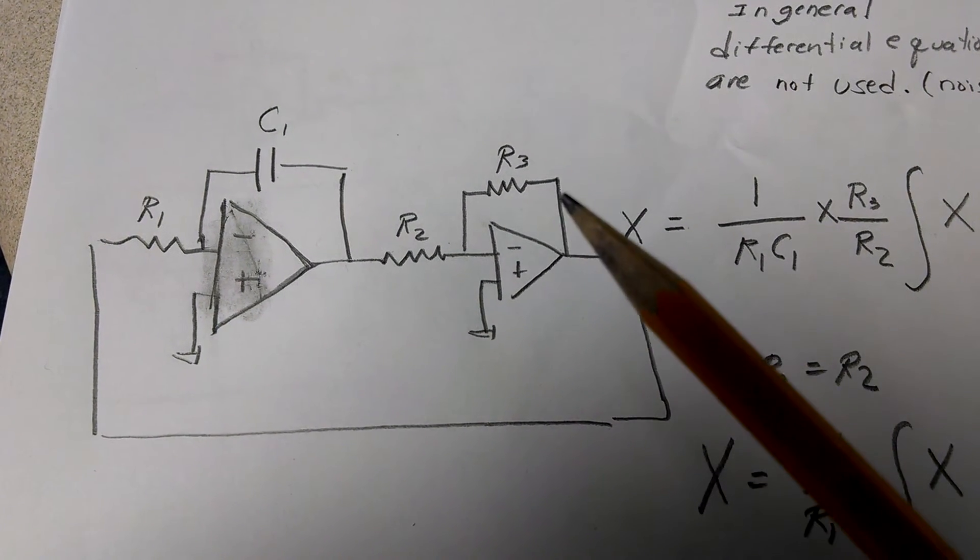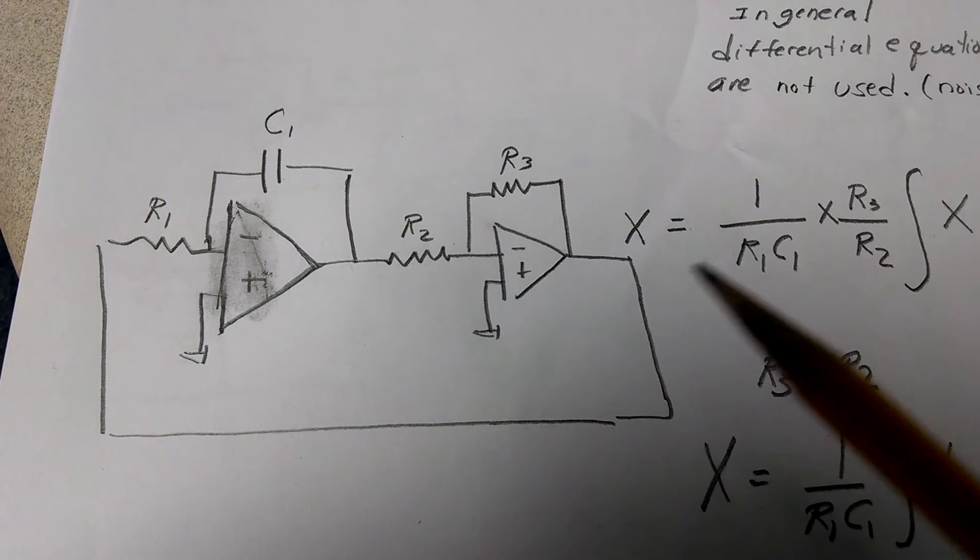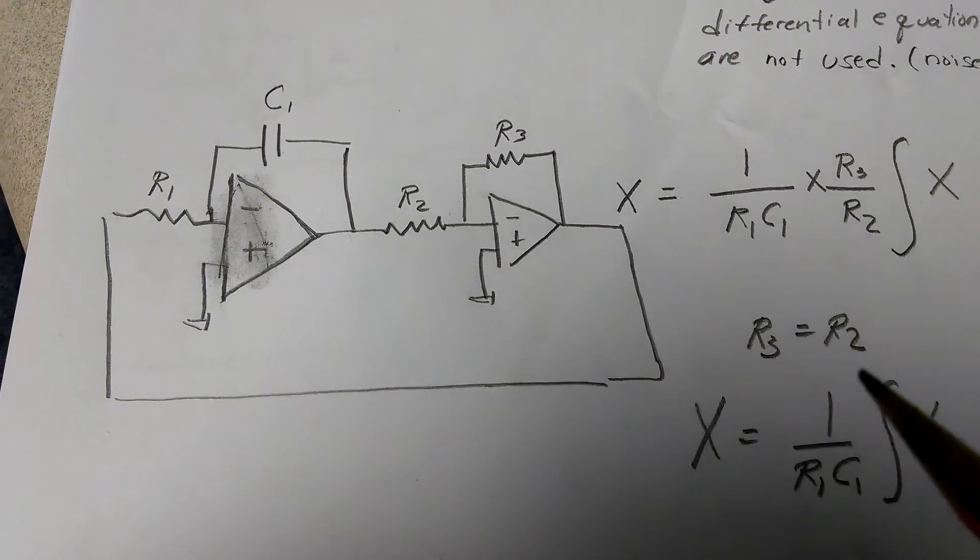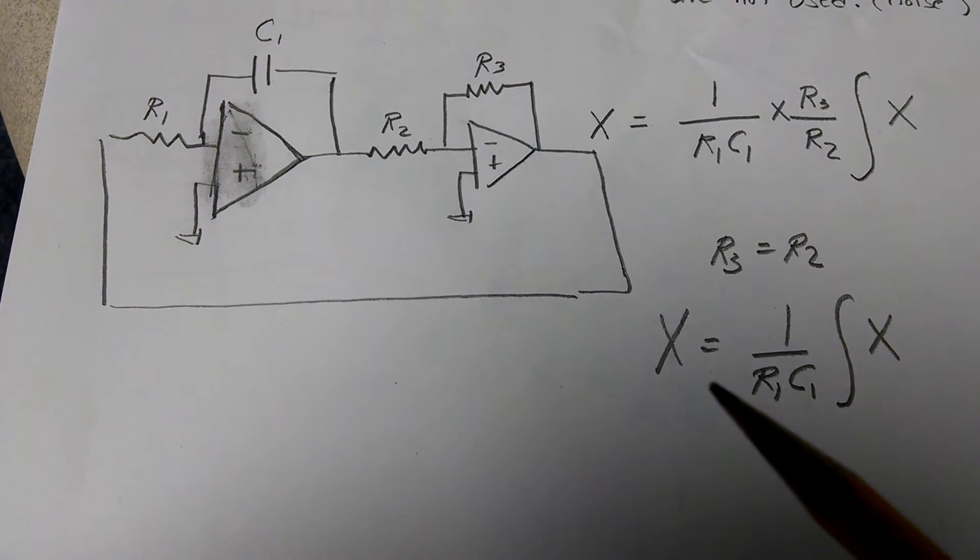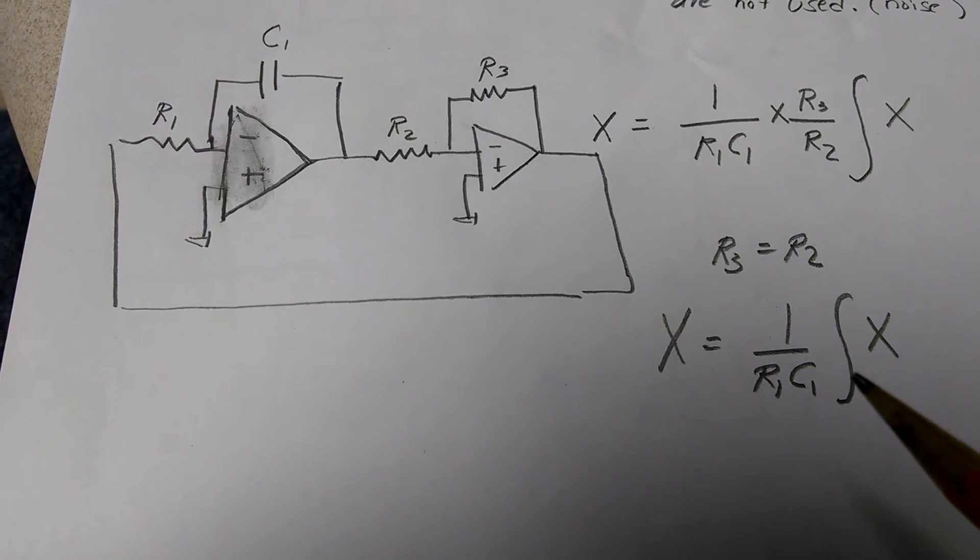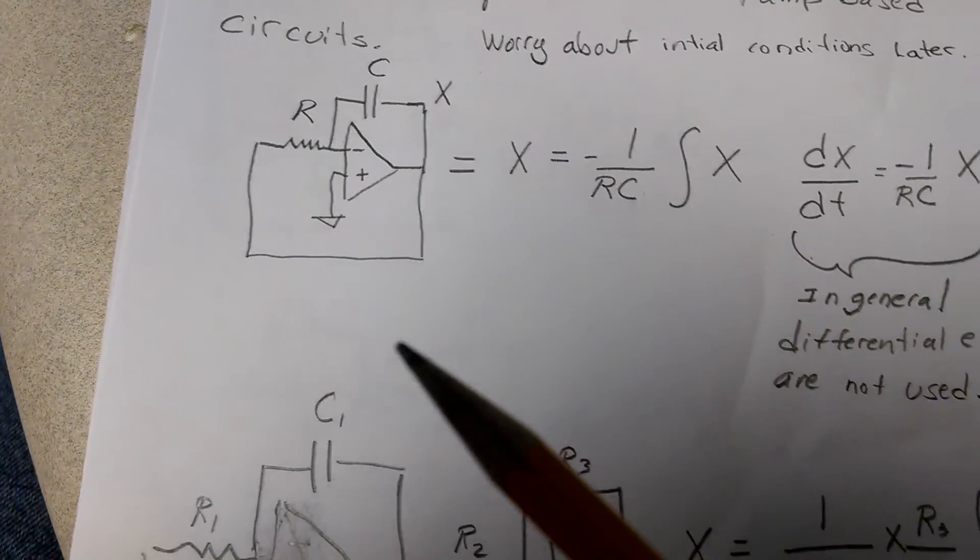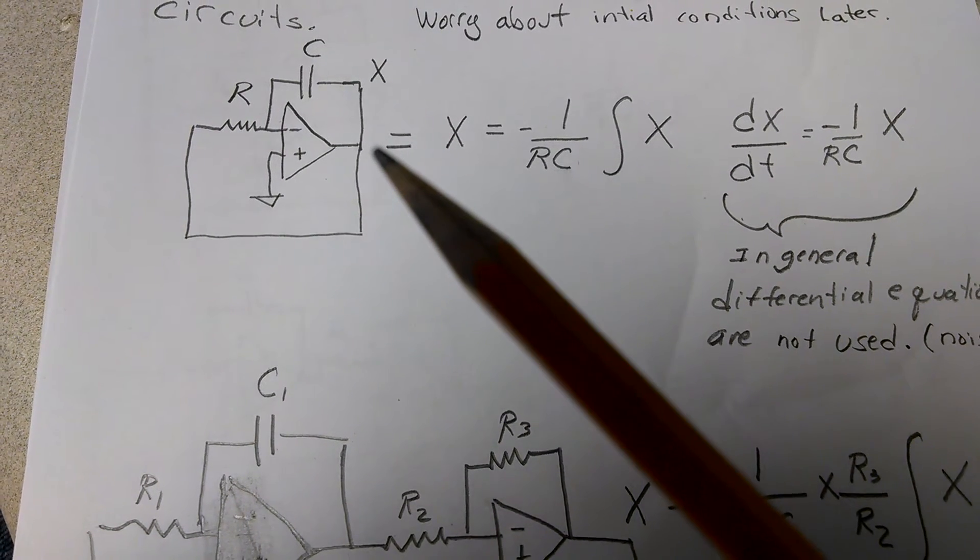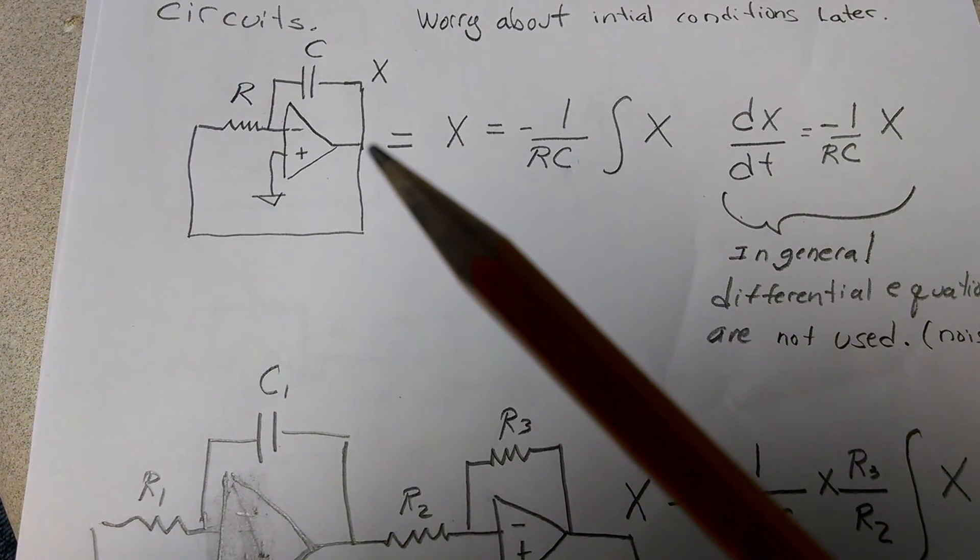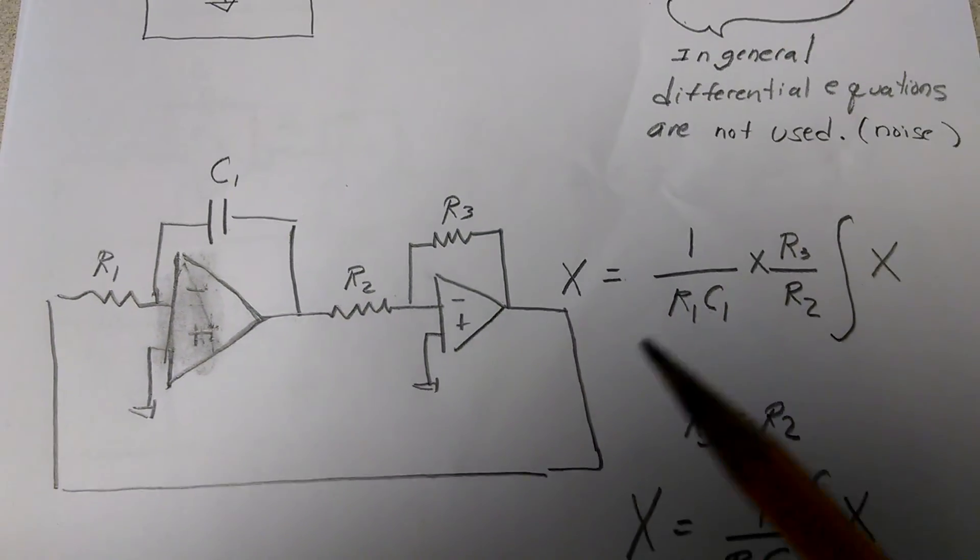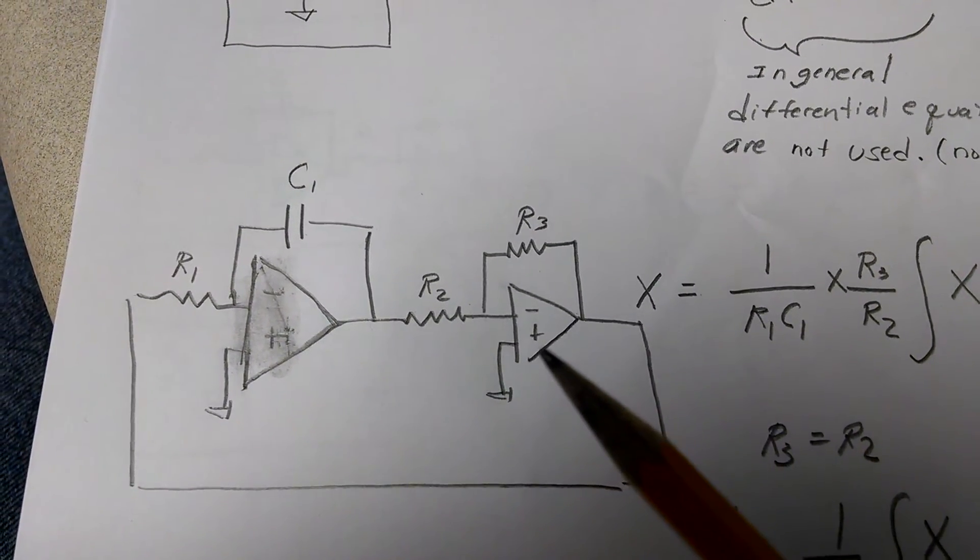and r3 divided by r2. And if you set those equal to each other, you just get x, 1 over r1c1 integral of x. And so really, if you need the minus, you don't need to add that inverting amplifier. And if you want that plus, you add the inverting amplifier.